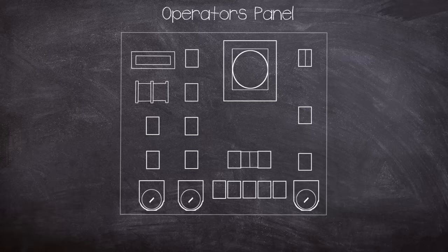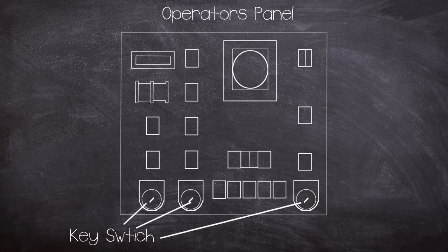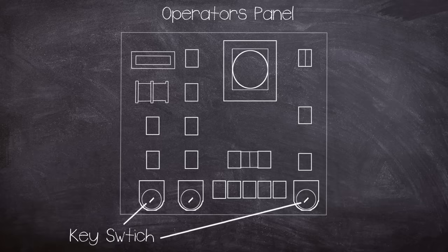The operators control the system via a control panel outside the irradiation room. There are three key switches for power on, source raise and machine on. The first two control the movement of the source and the third allows movement of the transport mechanism while the source is raised.